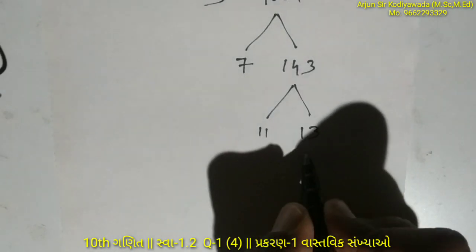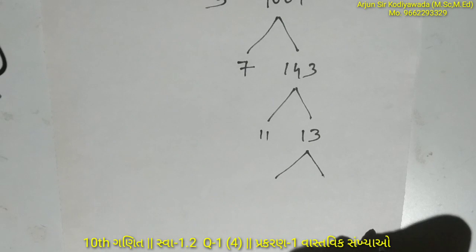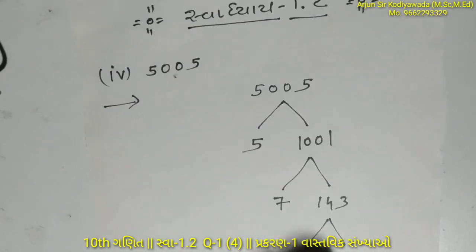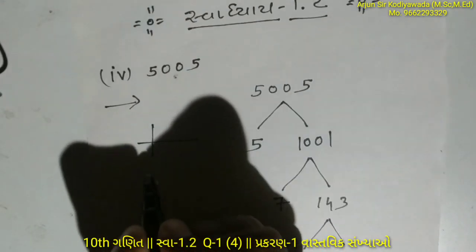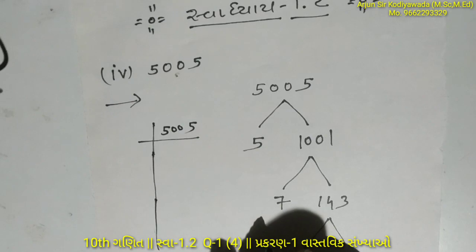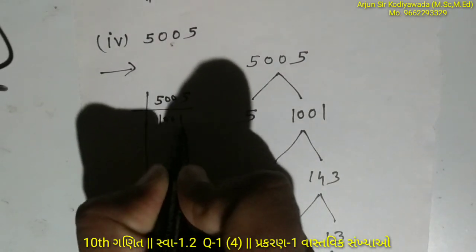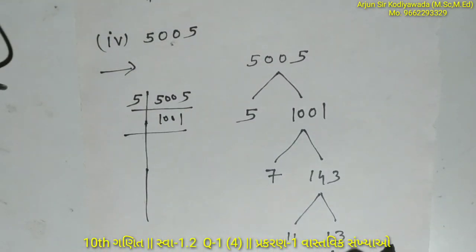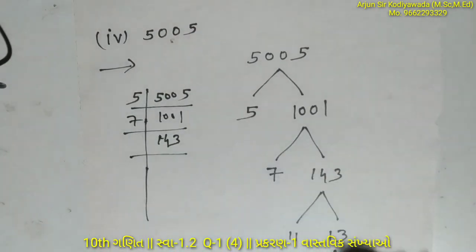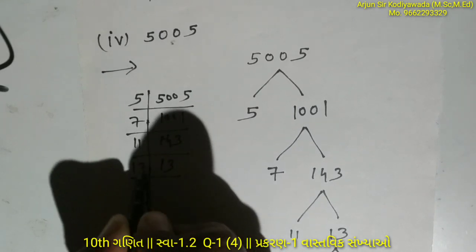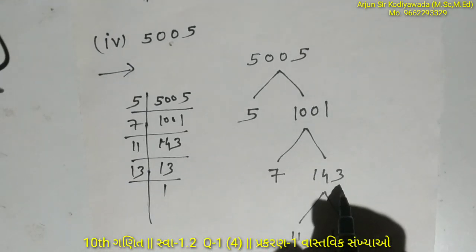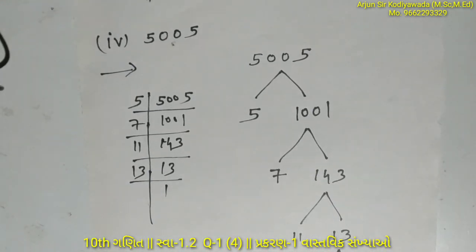When we multiply 11 by 13, we get 143. So we have now broken down the complete factorization. We started with 5005, divided by 5, then by 7, then by 11, and finally by 13.